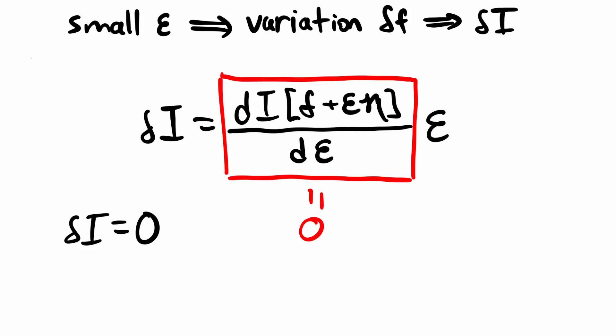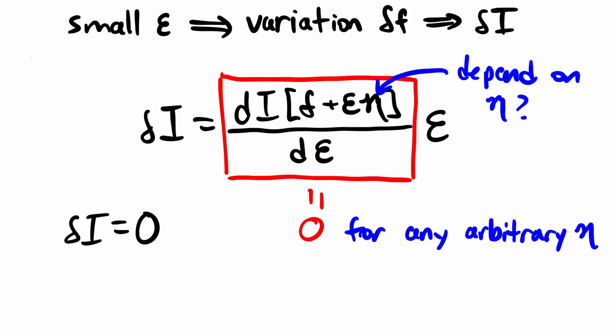One last thing before we move on. You may ask: if there are infinitely many ways to stretch the input function, shouldn't the rate of change of the functional depend on how you stretch the function — meaning it should depend on eta? The answer is yes. That's where we say the functional is minimized only if the derivative is zero for any arbitrary eta. This condition is annoying to deal with because in addition to your functional, you have to introduce an epsilon and make sure the derivative is zero for any possible eta. It turns out we can derive a better condition that is easier to use.